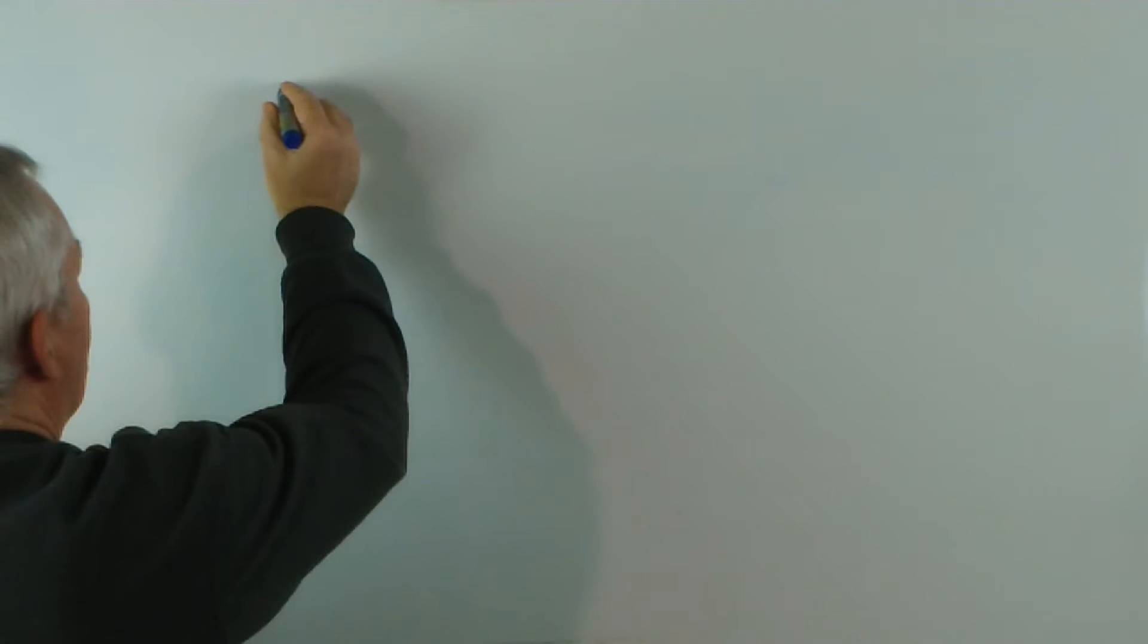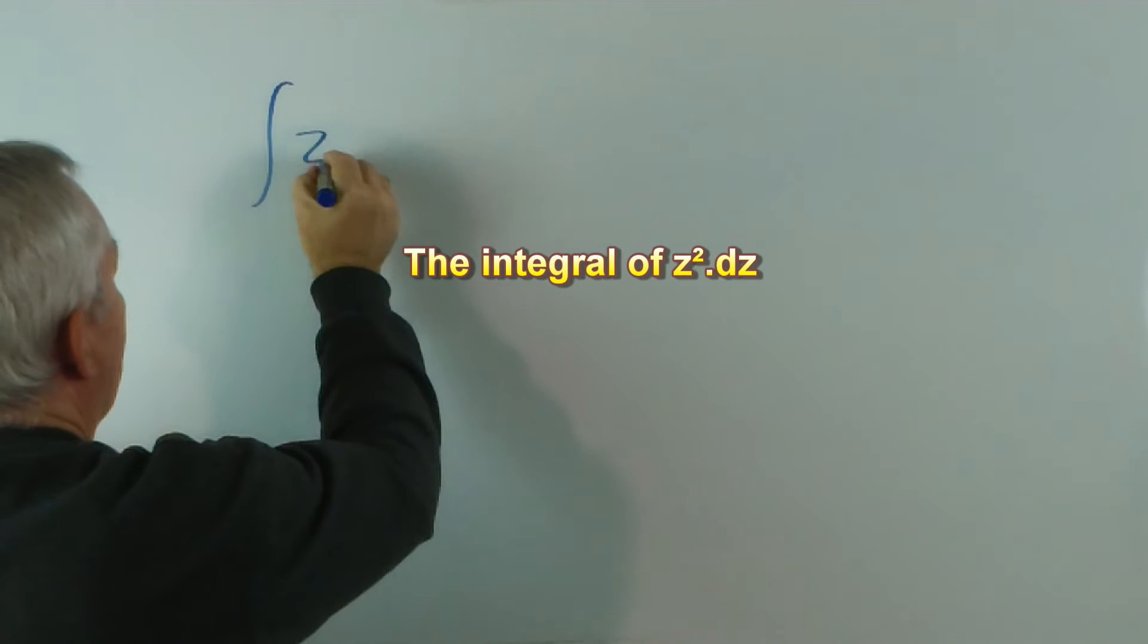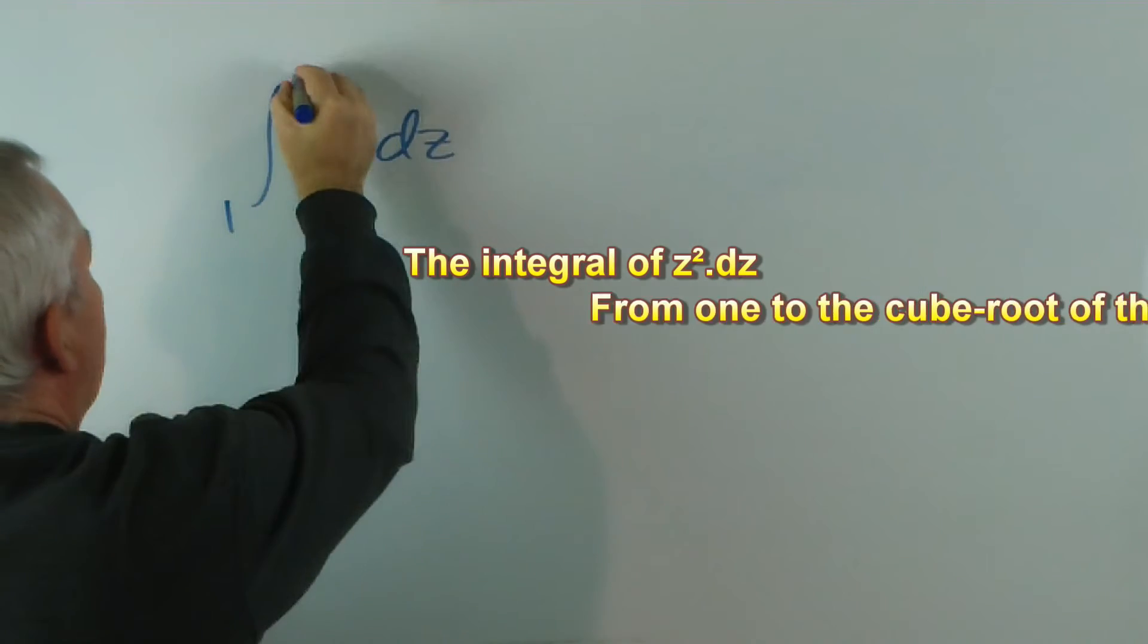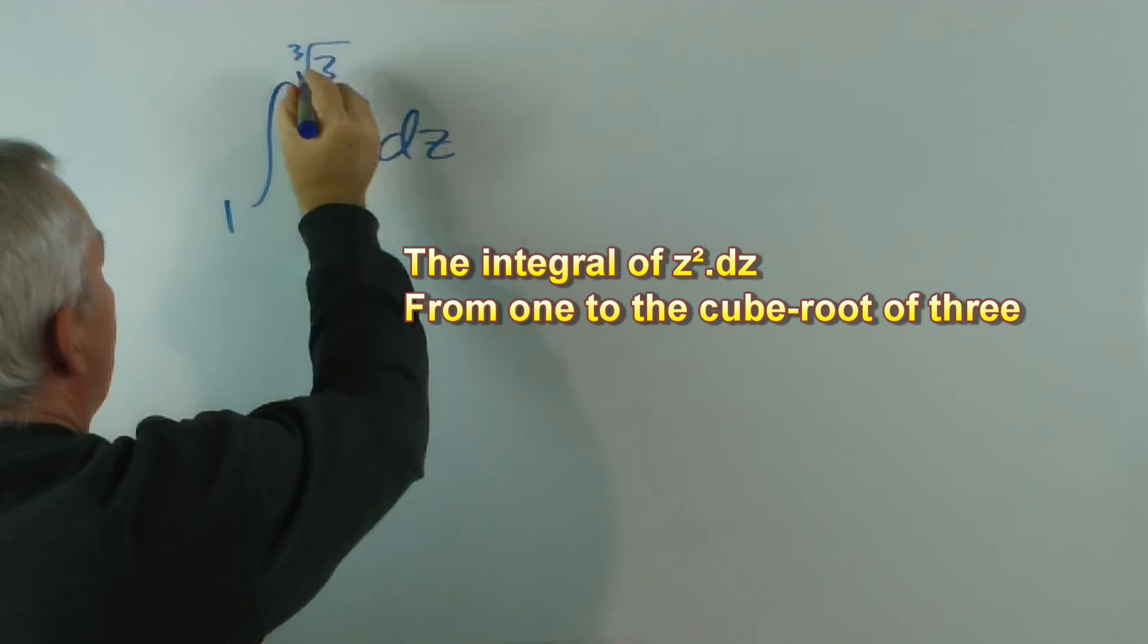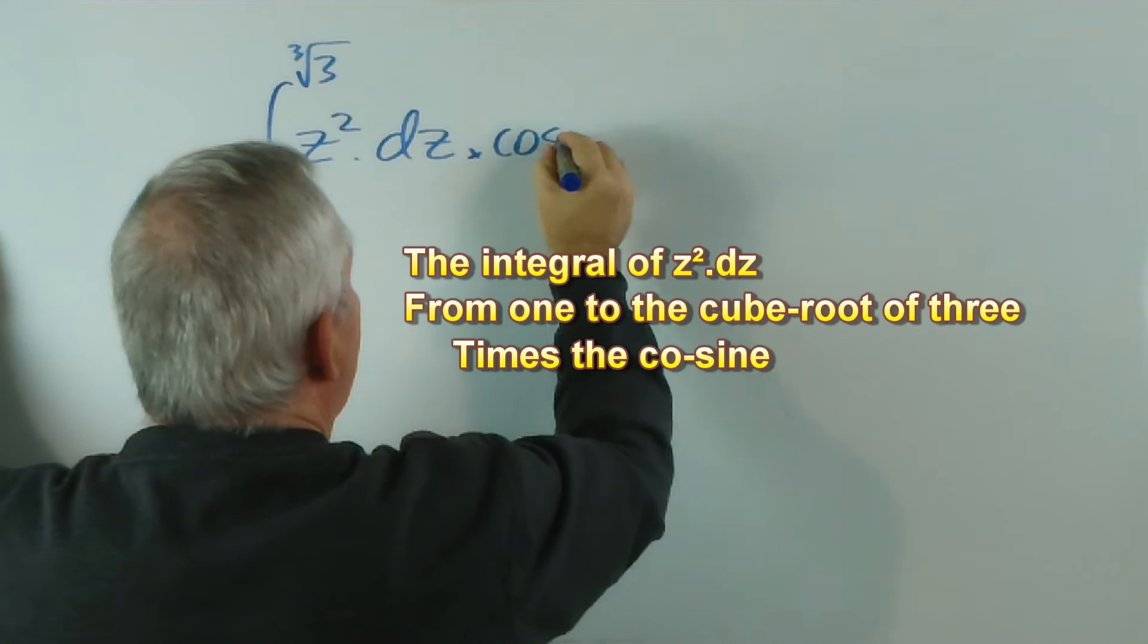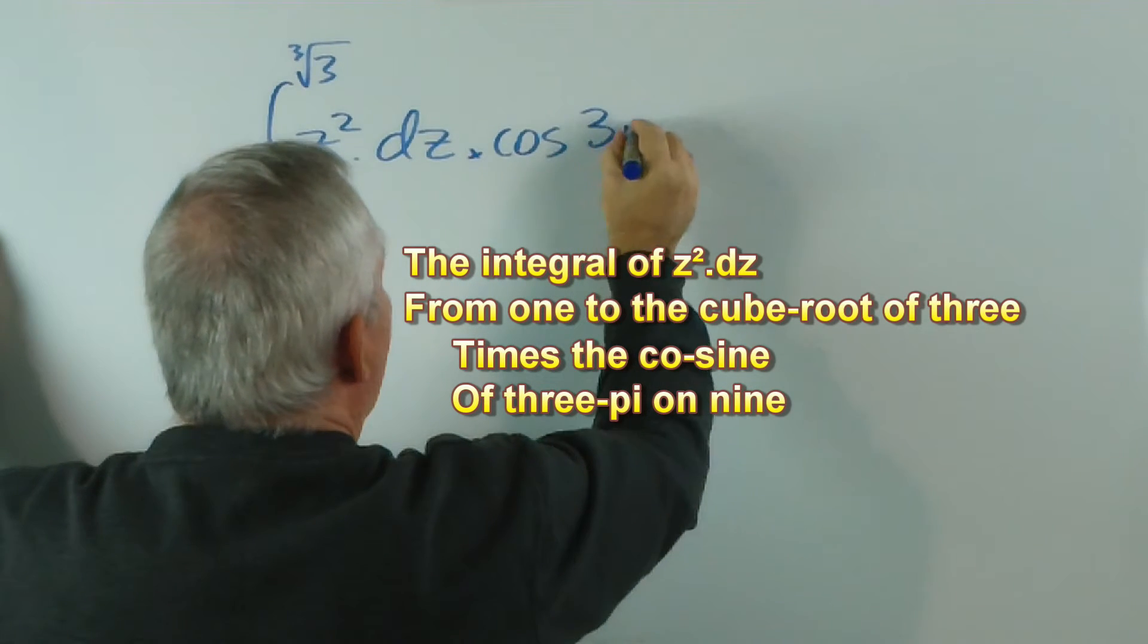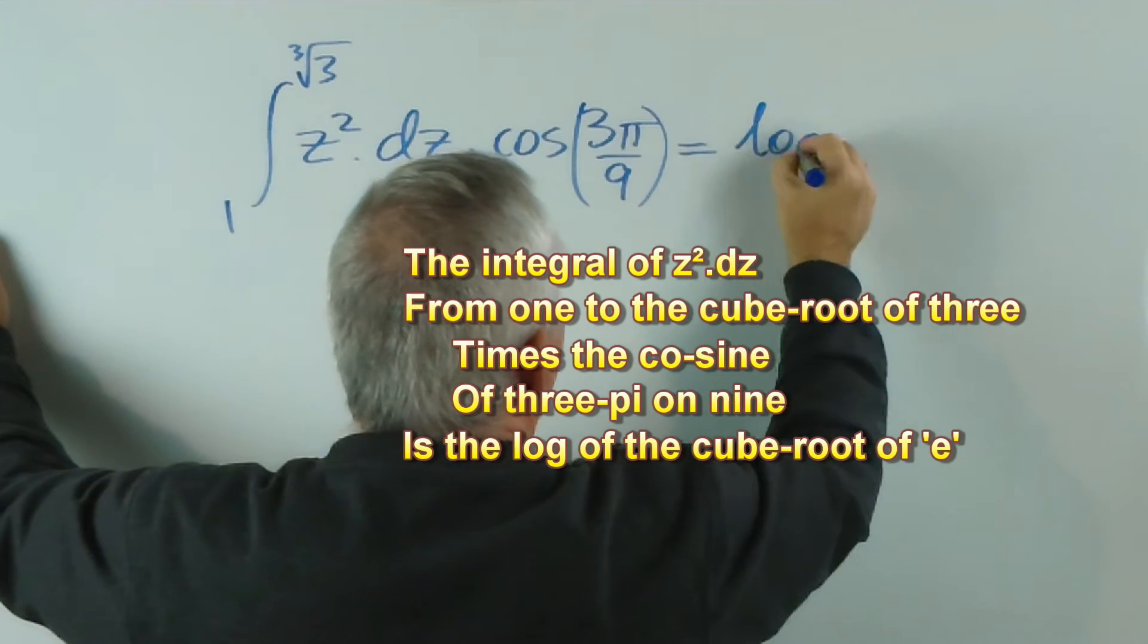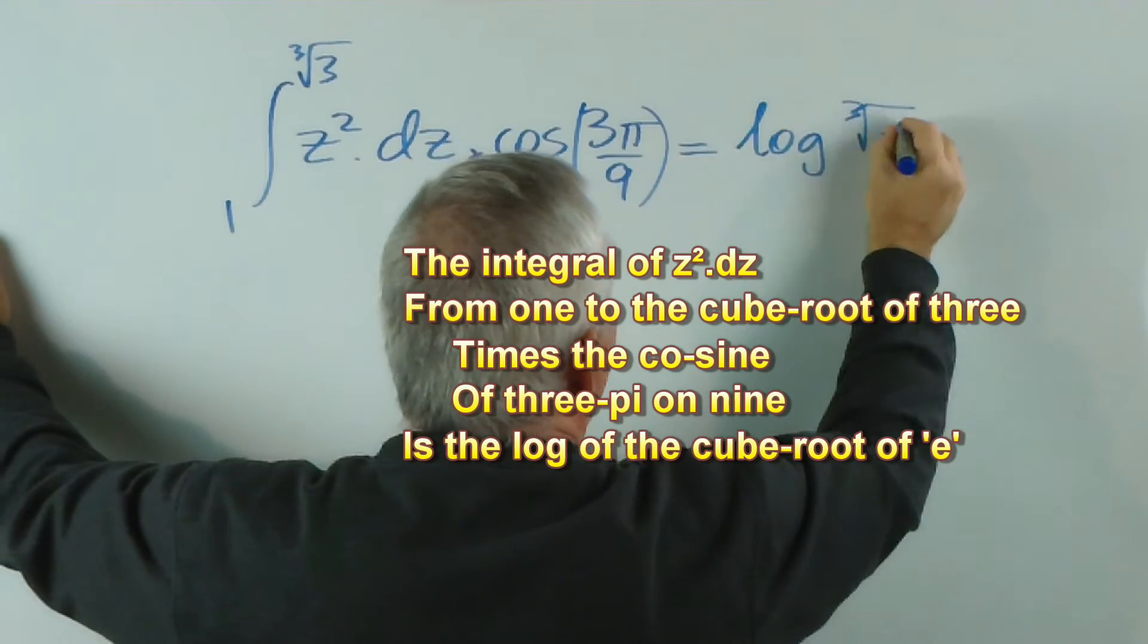So here's the integral of the limerick. The integral of z squared dz from 1 to the cube root of 3 times the cosine of 3π over 9 equals log of the cube root of e.